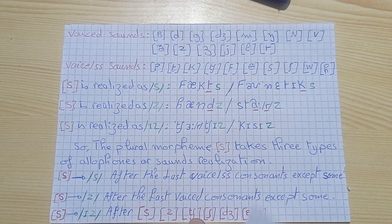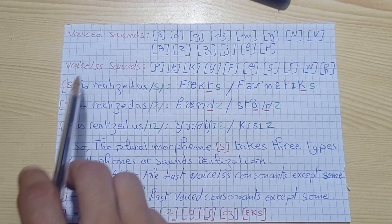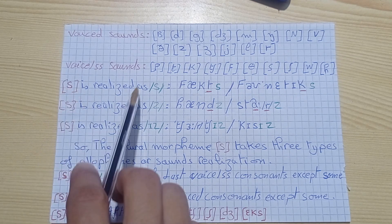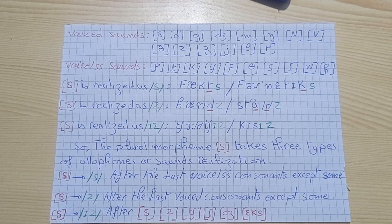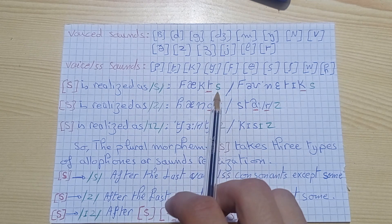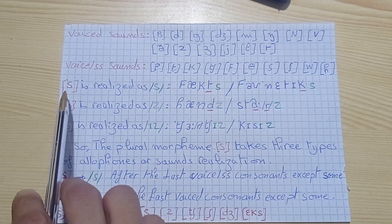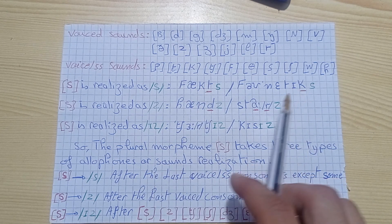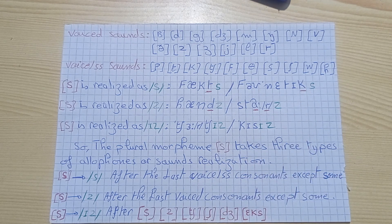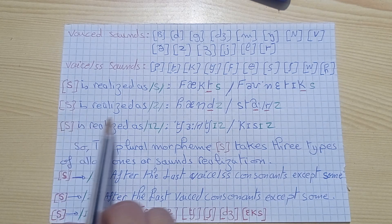Here are some examples to understand more. I have listed voiced consonants and voiceless consonants. When S is realized as /s/ — for example, the word 'fact': T is voiceless, so S is realized as /s/. The plural morpheme is realized as /s/ because the last sound is voiceless. The same with 'phonetics': K is voiceless, so the plural morpheme realization is /s/.